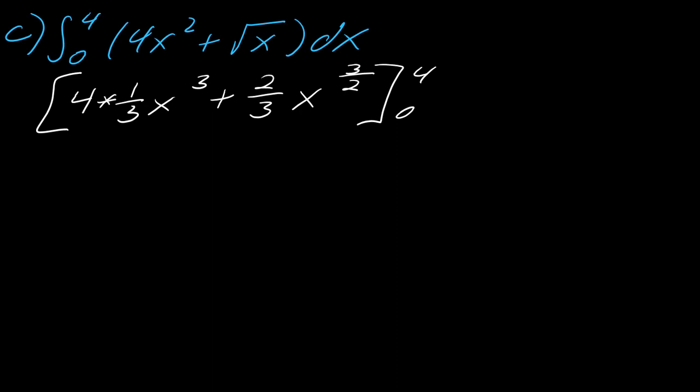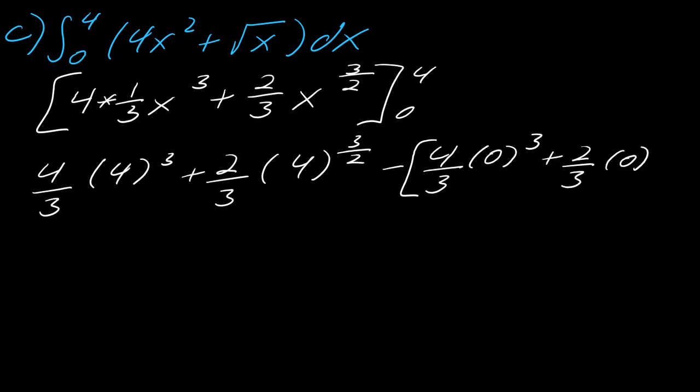So now I just plug in some numbers. So let's see, this is going to be four thirds times four cubed plus two thirds times four to the three halves minus four thirds. So I'll put square brackets around this: four thirds times zero cubed plus two thirds times zero to the three halves. So obviously this part here is just going to be zero, so we can kind of ignore it.